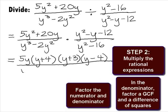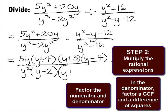It looks like we have a greatest common factor of y squared that we can factor out of the first denominator, which will factor as y squared times y minus 2. The second denominator factors as y plus 4 times y minus 4.